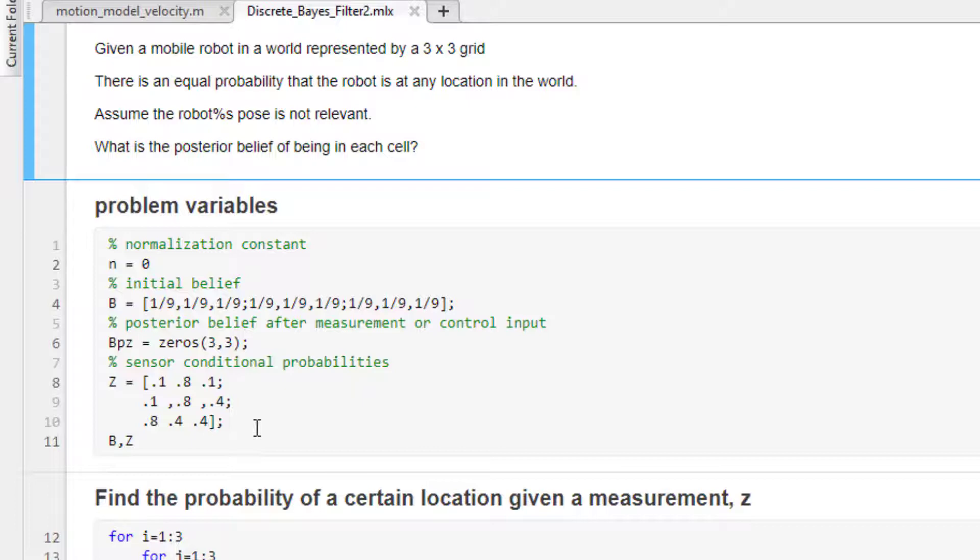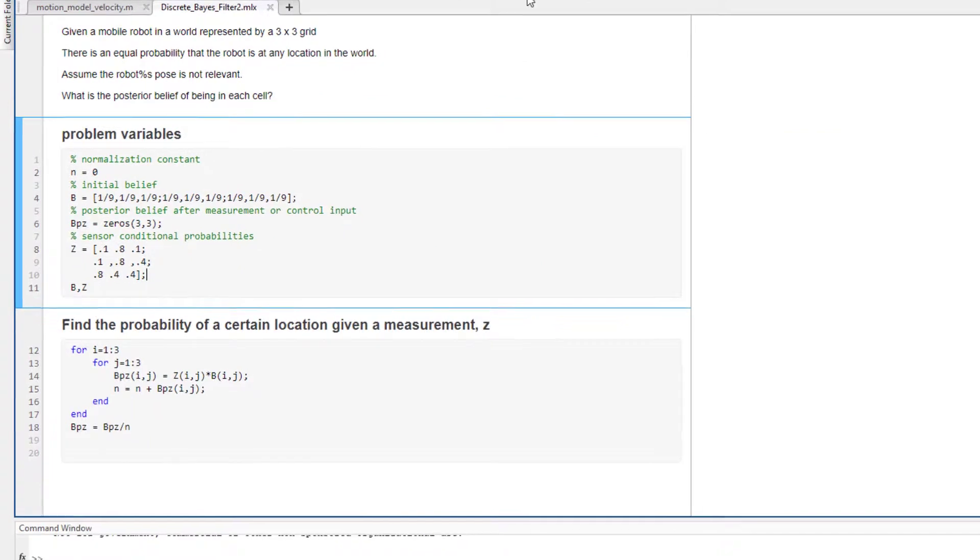Then here we have our probabilities based upon that sensor value where we have 0.1, 0.8, 0.1, 0.1, 0.8, 0.4, and 0.8, 0.4, 0.4. So when I run this section what we will have is a printout of all of our initialized variables in B and z.